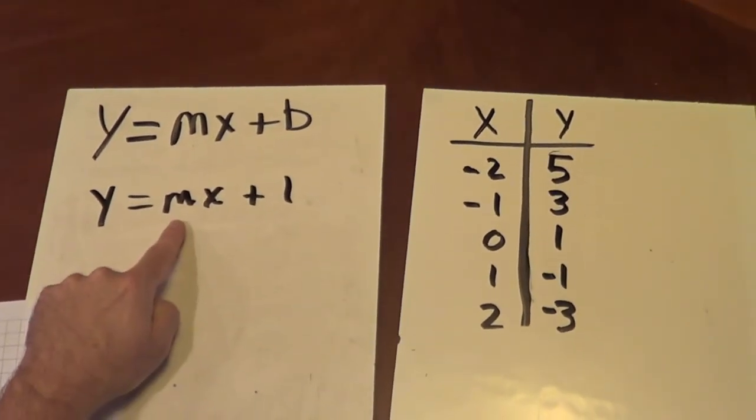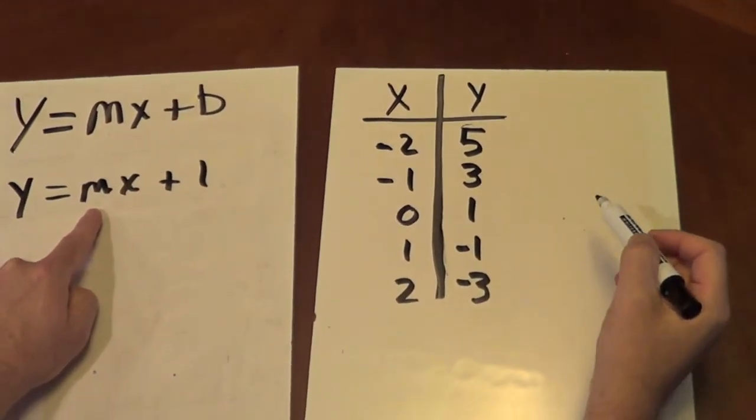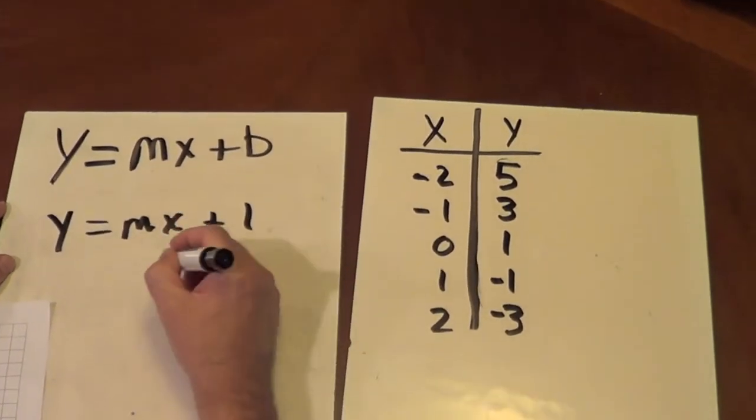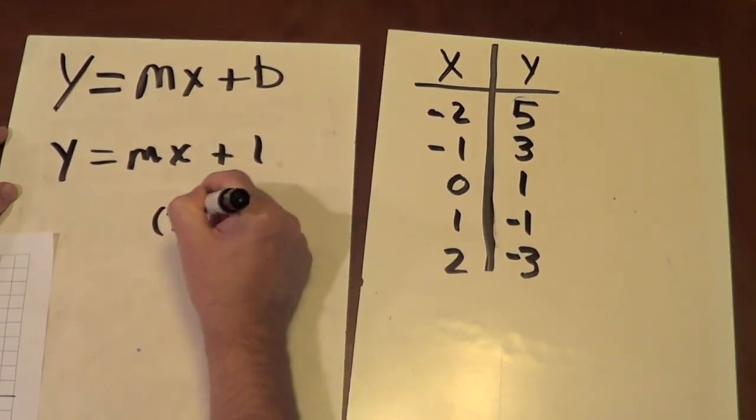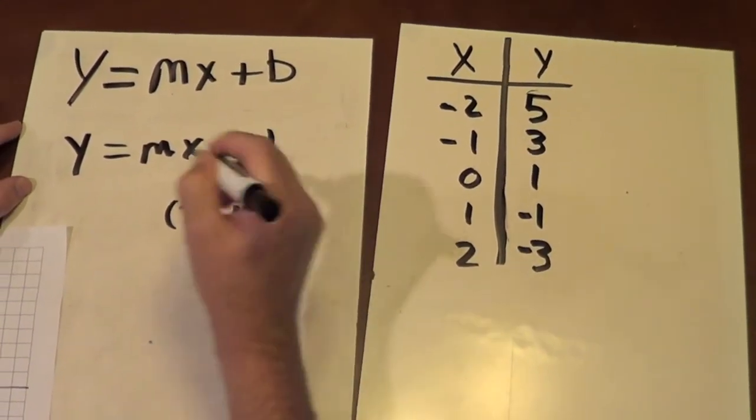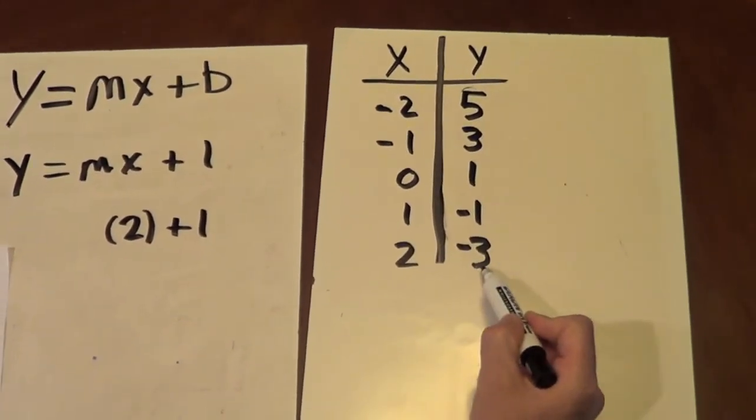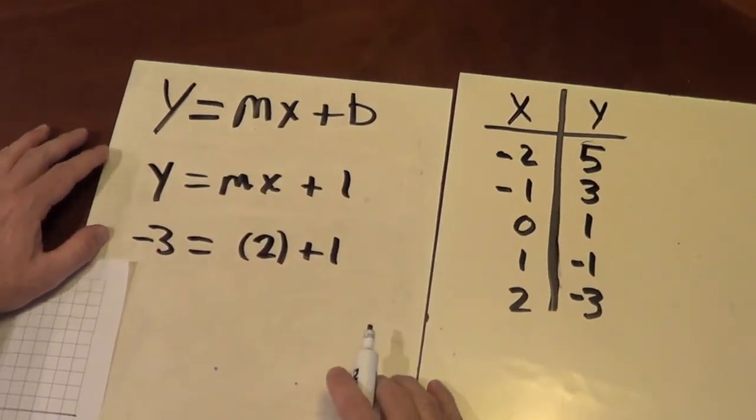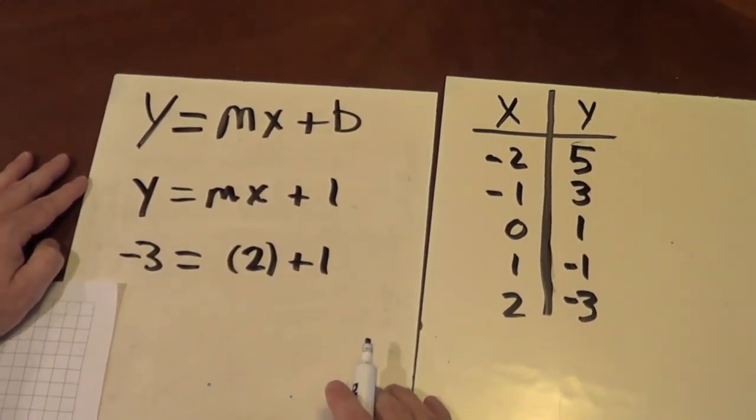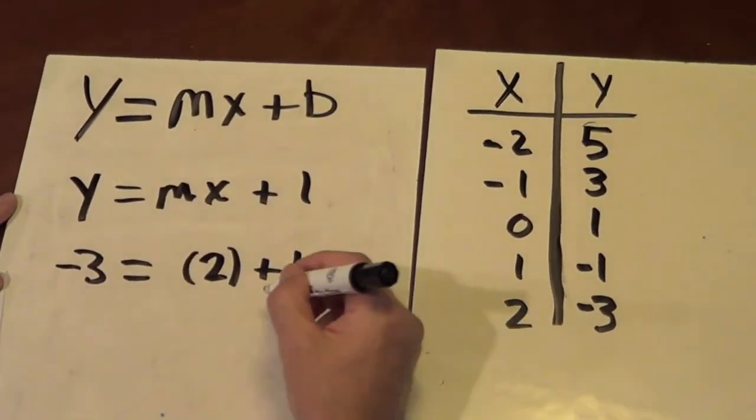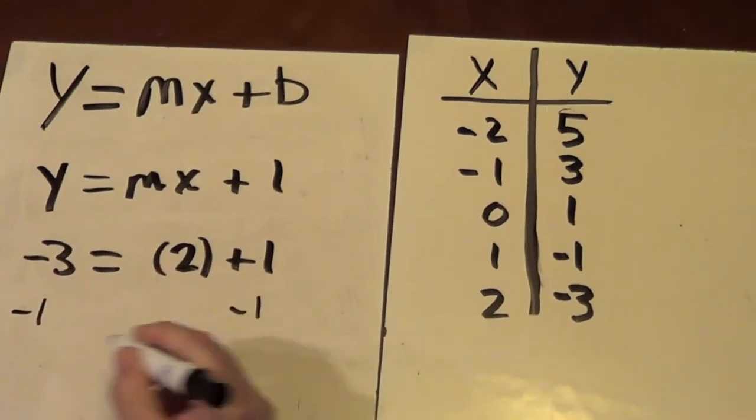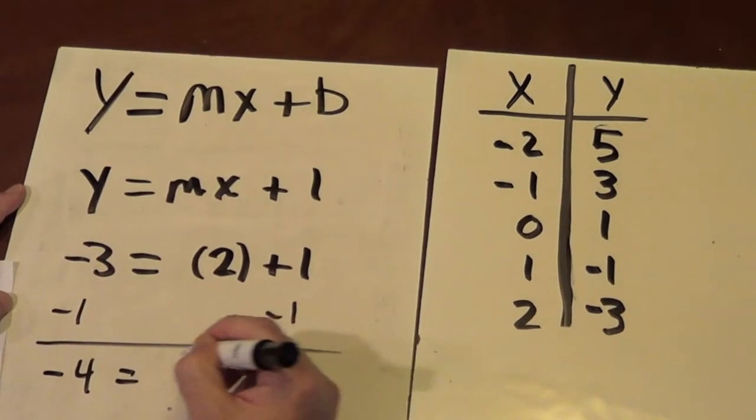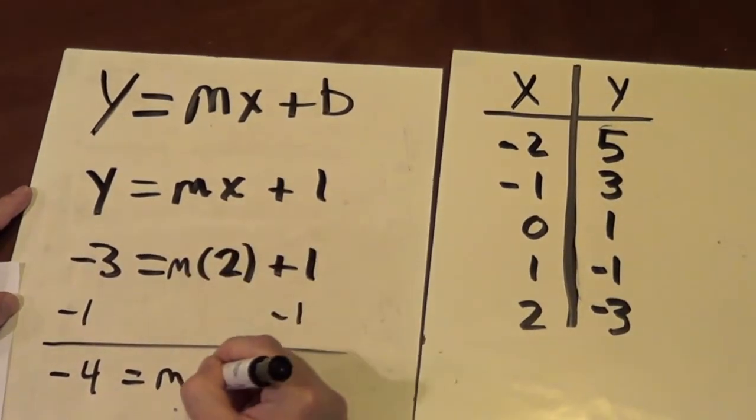Now, in order to find m, we can simply plug in any two points and find y. So if I plug in x equals 2, I have plus 1. And I have, if x equals 2, y is negative 3. So I have negative 3. And I'm going to subtract 1 from both sides.